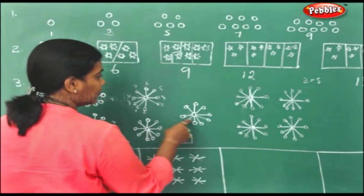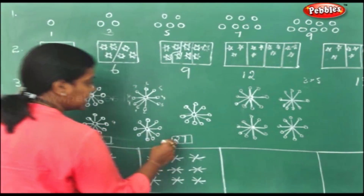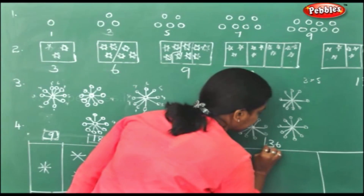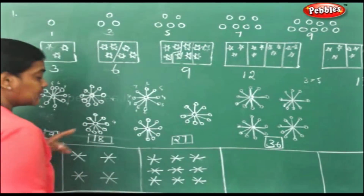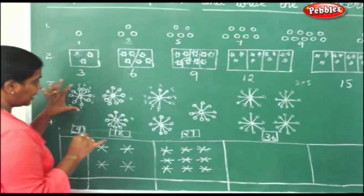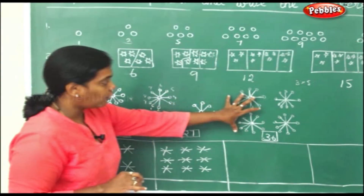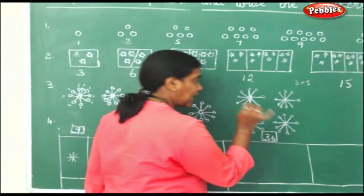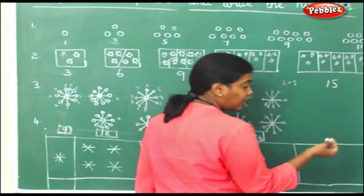So 9, 18, 27 — it will be 36. So this is nothing but a repetition of the 9 times table: 1 flower is drawn, 2 is drawn, 3 is drawn, 4 flowers are drawn, 5 flowers we will draw with 9 petals. So 9 fives is 45.